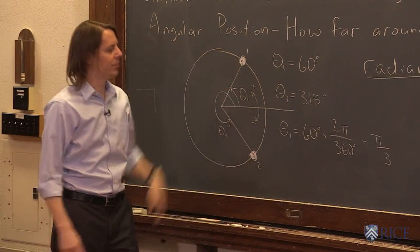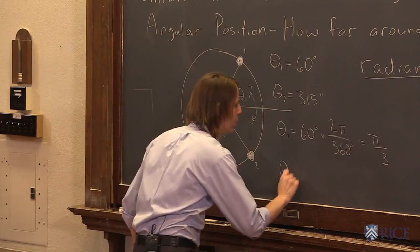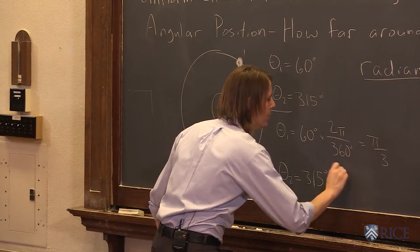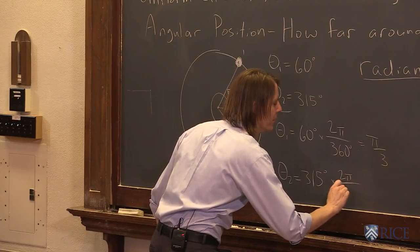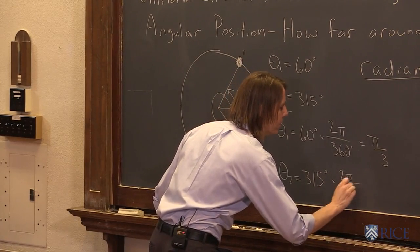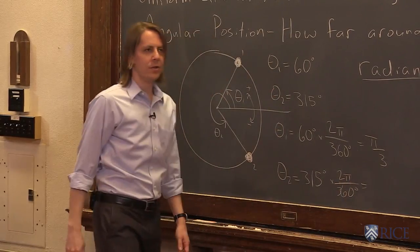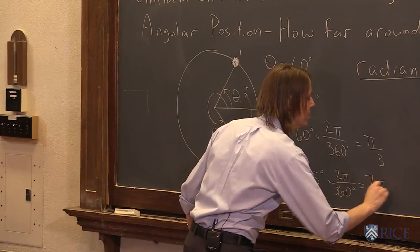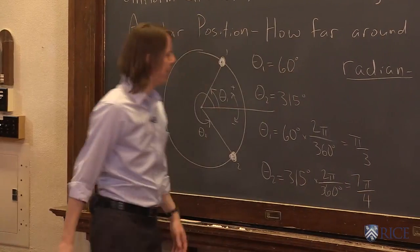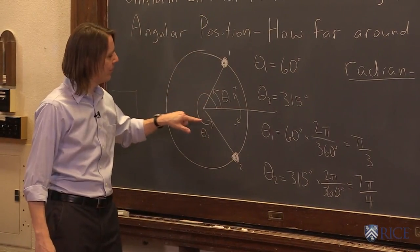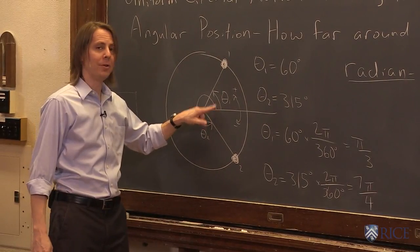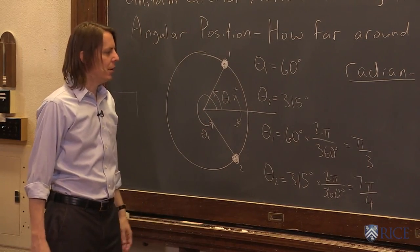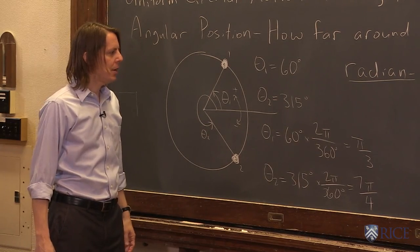Theta 2 is 315 degrees. Same thing: multiply it by one, multiply it by 2π radians over 360 degrees, and that is 7π over 4 once you work out the math. So this angle all the way around is 7π over 4, almost a 2π, right? 2π is all the way around; 8π over 4 would be all the way around.